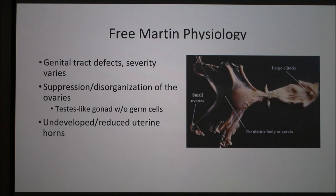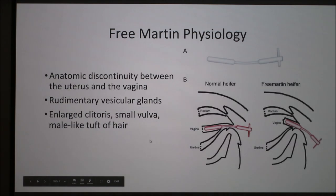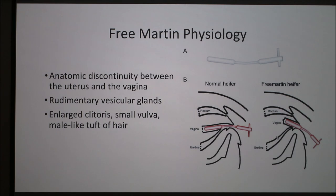So what happens? It causes genital tract defects, and the severity can vary depending on the case. There's suppression and disorganization of the ovaries — the ovaries tend to look more like testes and don't have germ cells, so they can't produce eggs. There's also an underdeveloped or reduced uterine horn, and in some examples there is no uterine body at all. There's an anatomic discontinuity between the uterus and the vagina, rudimentary vesicular glands, a large clitoris, small vulva, and a male-like tuft of hair. This graphic shows a freemartin probe, also called a Ruin or Jovet probe, which is used to test how deep the vagina is.